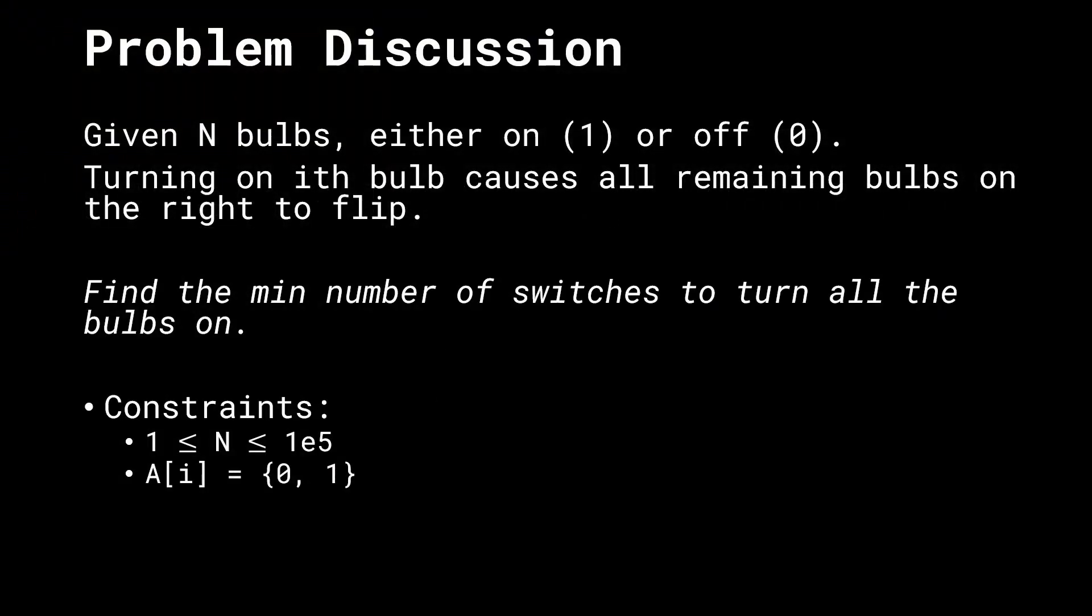We are given N bulbs in total which are either on or off, represented by 1 and 0 respectively. The condition mentioned in the question says that turning on the ith bulb causes all of the remaining bulbs on the right-hand side of it to flip. Which means that all of the bulbs on the right-hand side which were 1 will become 0s and vice versa.